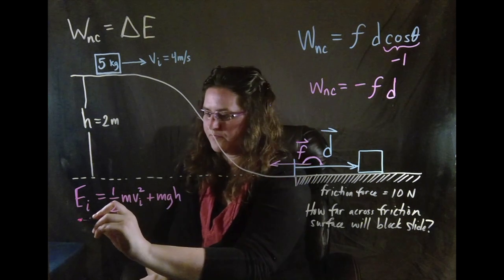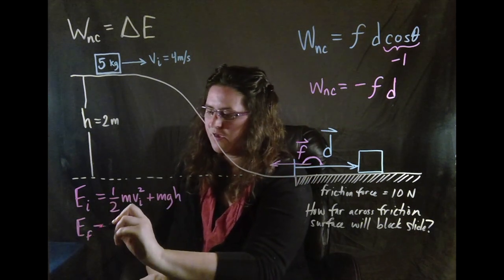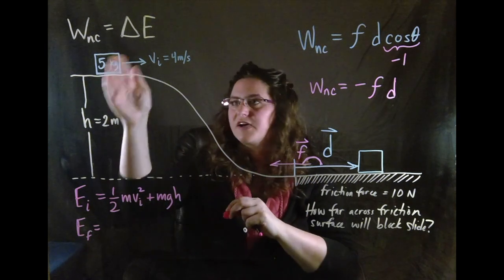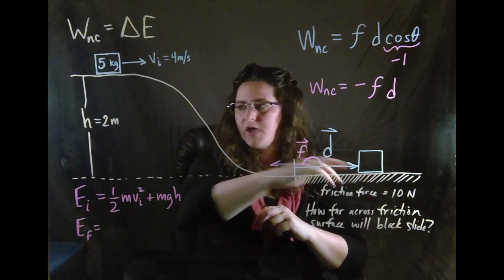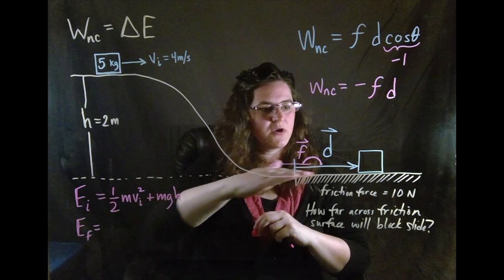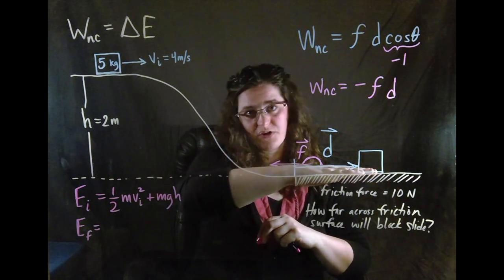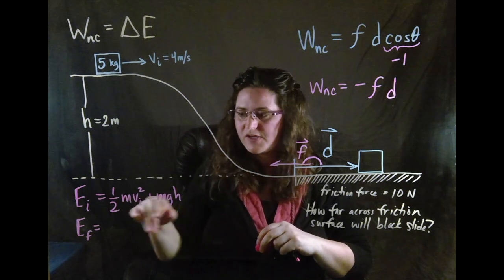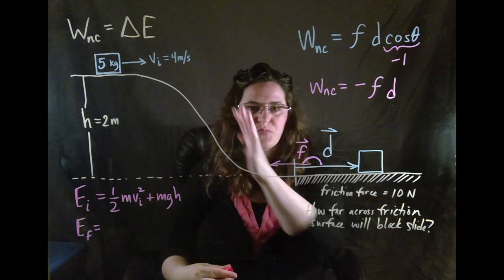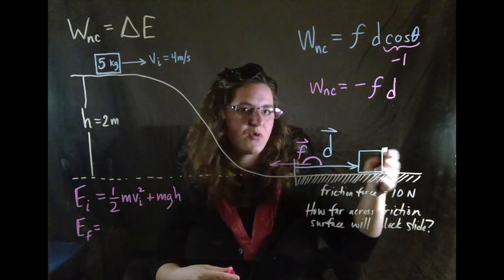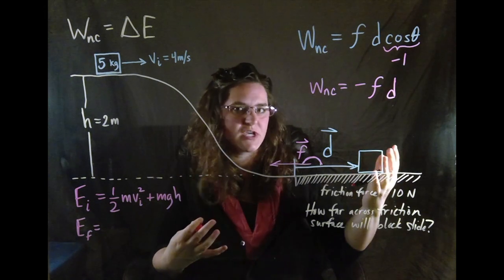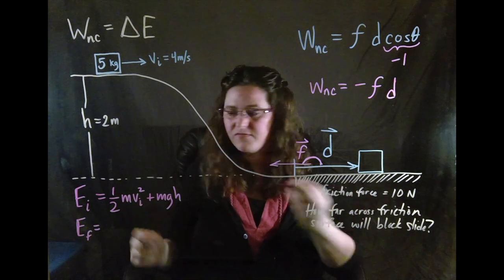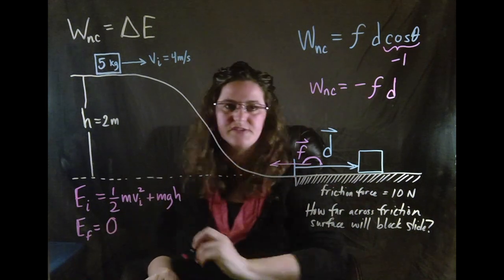The final energy. The final energy is equal to, well, it has stopped moving and it has come to where we called our zero potential here. So it has no potential. It has no kinetic. There were no springs in this system and it's not compressing a spring here. So there's no potential energy from the spring either. Those are the only forms of energy that we can have. So the final energy is zero.